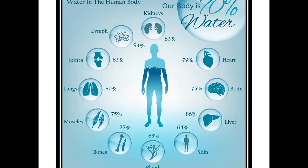Water in the human body. Our body is 70% water. Kidney contains 83%, heart 79%, brain 75%, liver 86%, skin 64%, blood 83%, bones 22%, muscles 75%, lungs 80%, joints 83%, lymph 94%.